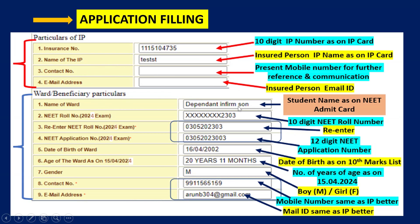In the ward or beneficiary particulars section, enter the student name. Enter the NEET roll number according to the NEET UG 2024 examination — this is available on the admit card and is a 10-digit number. Re-enter the NEET roll number. Next, enter the NEET application number, which is also available on your admit card and has 12 digits. Enter the date of birth of the ward. For age of the ward, calculate as on 15th April 2024 and write in terms of years and months.